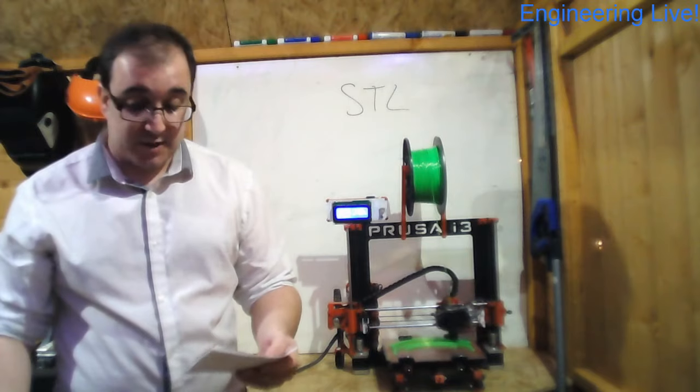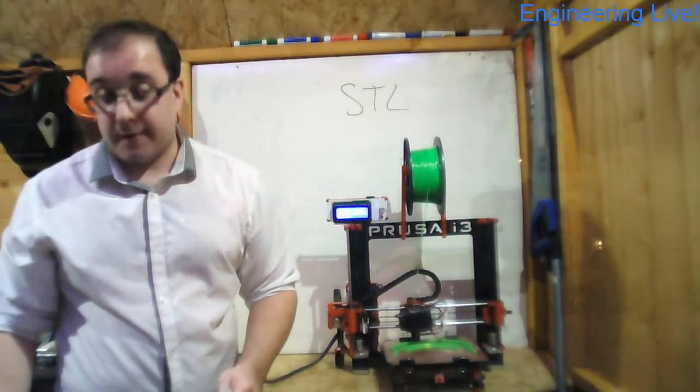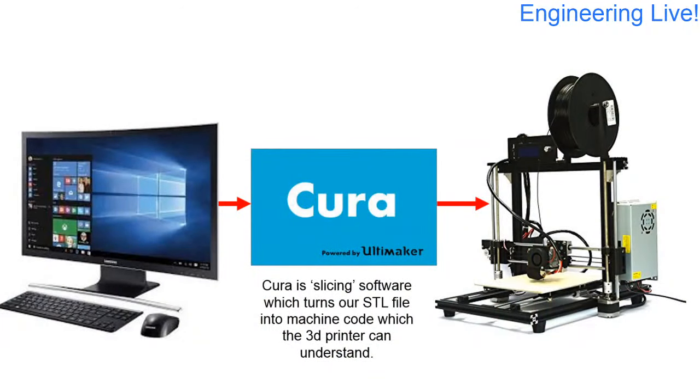And we do that using a program called Cura. So Cura is our go-between. That's what takes us from our computerized 3D model to our 3D printer. And it does that by slicing up our model into lots of really tiny layers. And that creates our coordinate list that we can send to the printer. And we call Cura a slicing software as it takes our model and slices it up into the layers that can then be interpreted by our 3D printer.